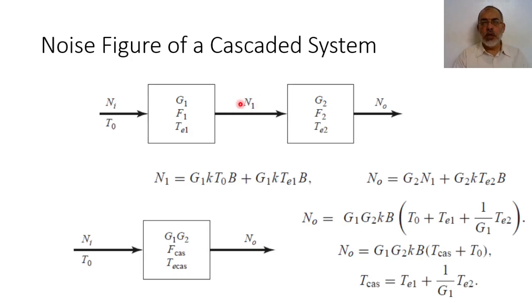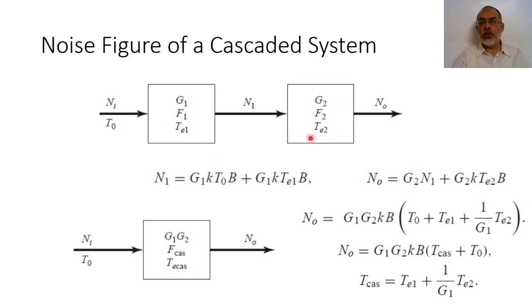This input noise will be amplified by gain G2. In addition, we add the noise due to the internal noise temperature TE2. So the output noise N2 would be G2 multiplied by N1, plus the internal noise due to the equivalent noise temperature TE2, which equals G2·K·TE2·B.